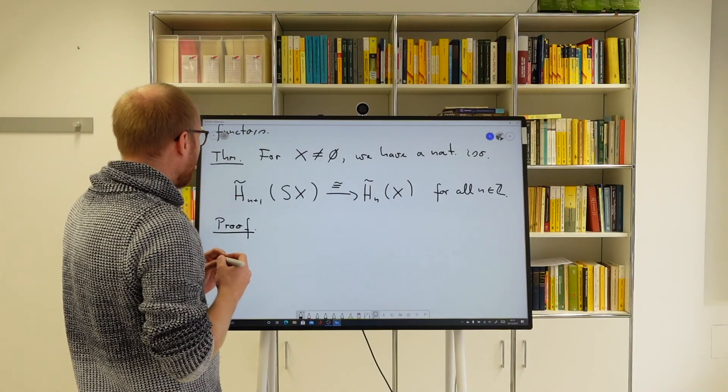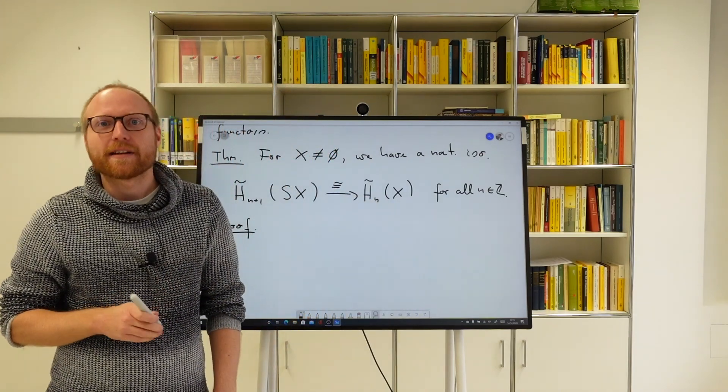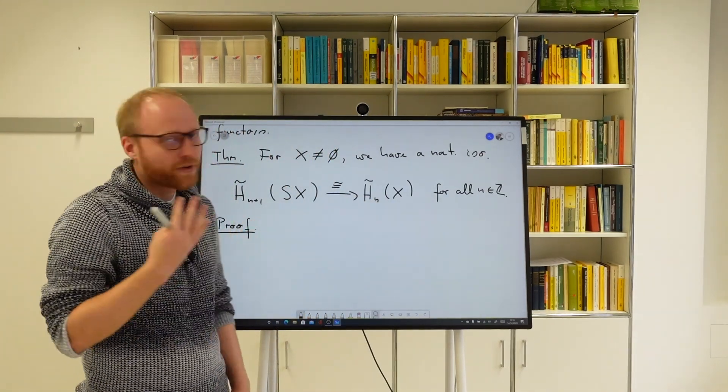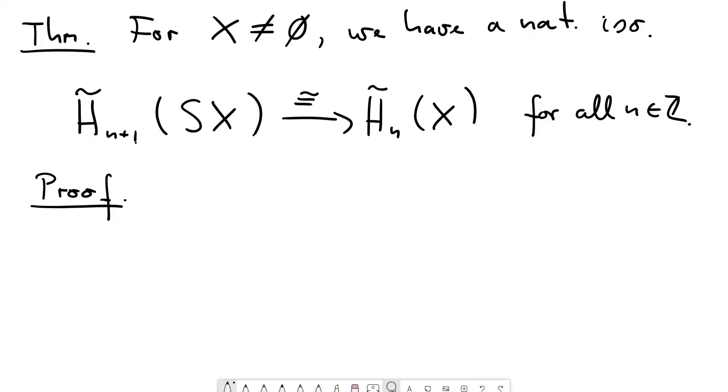The proof is now easy because we already have the long exact sequence, the collapse sequence for closed neighborhood deformation retracts. And this is precisely what we will use now. This is also the assumption that the space X is non-empty.